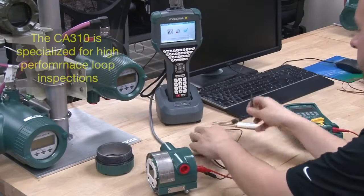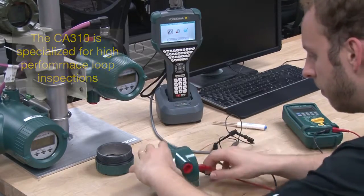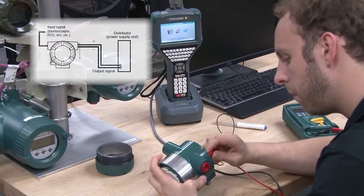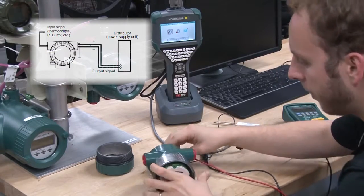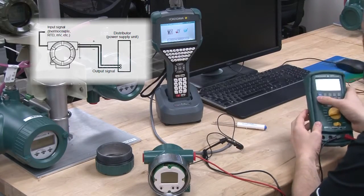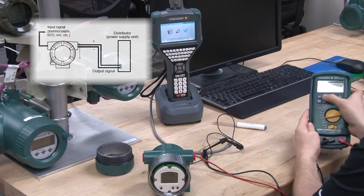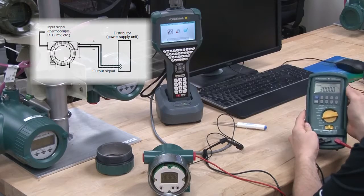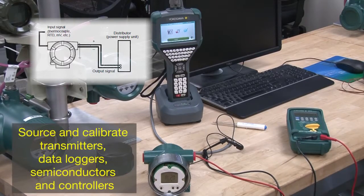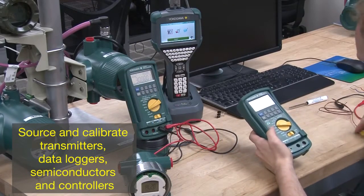The CA310 voltage and current simulate model is specialized for high-performance loop inspection, capable of executing a loop check by simulating a transmitter, syncing the current signal from its external source. DC milliamp signals can be measured by supplying power to a transmitter from a 24-volt DC power supply. This type of calibrator is commonly used to measure current flow in a loop or to source and calibrate devices like transmitters, data loggers, semiconductors, and controllers.